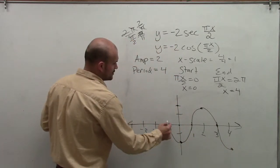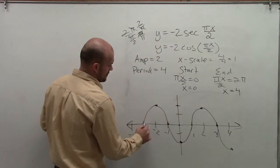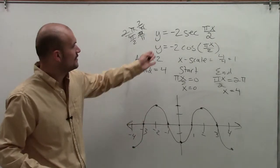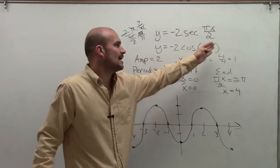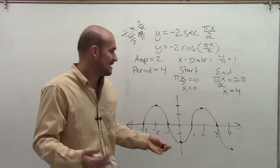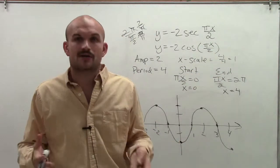Then I'll continue in this direction. So that's how we graph the negative 2 cosine of pi x divided by 2. And it's important to graph that so we can determine how to graph our secant graph.